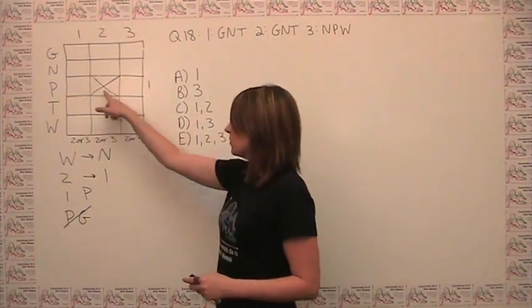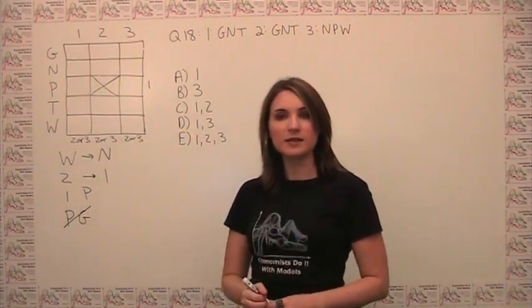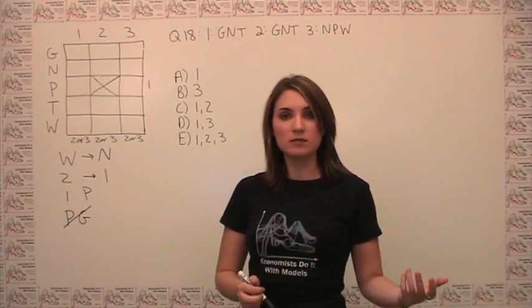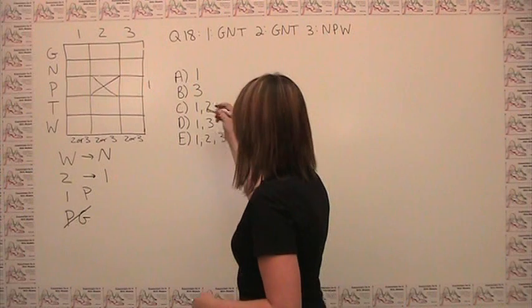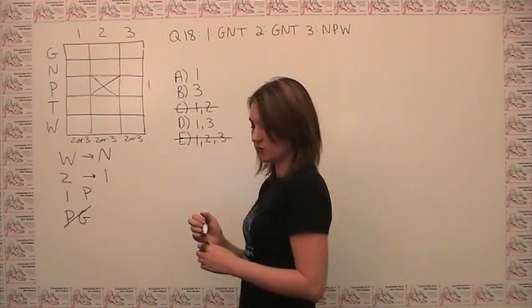For example, we figured out here that center 2 cannot recycle plastic, so we can get rid of all of the answer choices that have center 2 in them. So we can get rid of choice C, and we can get rid of choice E.